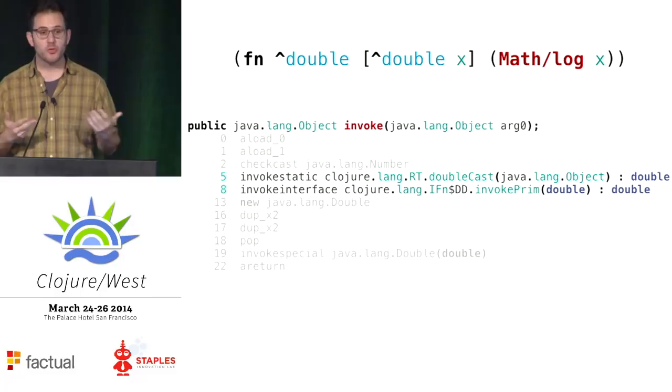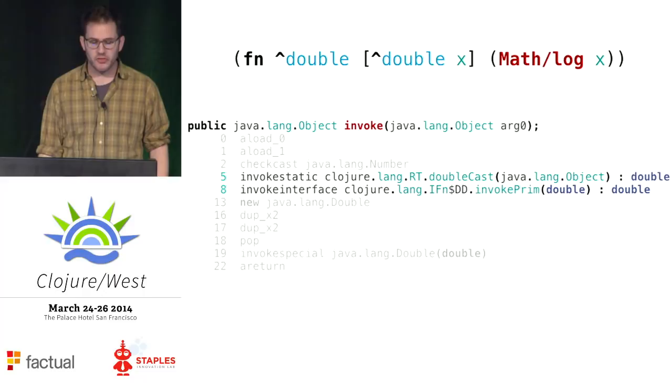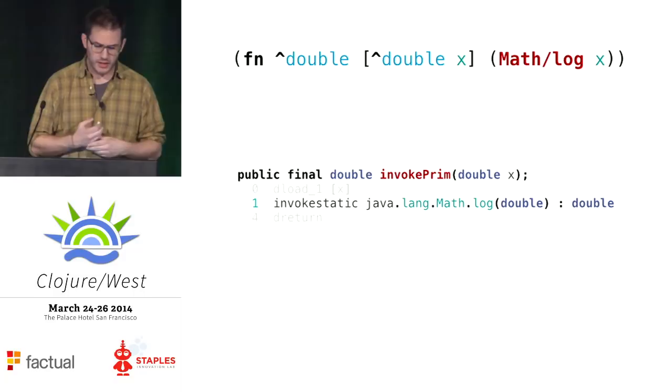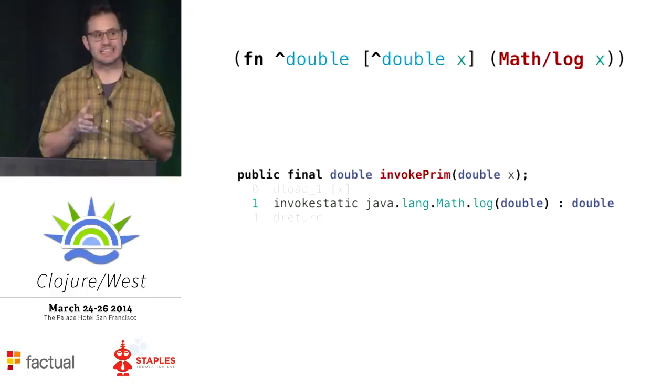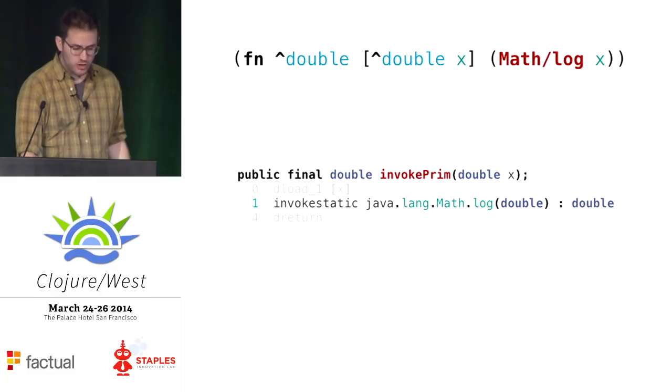If we add type hints — typing both the input and return type as primitive doubles to match what math.log actually takes and returns — the invoke function changes. It casts the object to a double and calls invokePrim, which only gets created when we have primitive types in the input or output values. InvokePrim simply calls math.log. This is an eminently inlineable form of a function — we can be fairly sure the JVM is going to inline this for us, removing that layer of indirection. So this is pretty good.